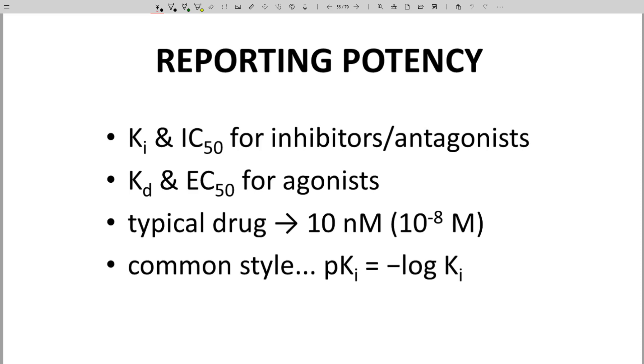During previous discussions on enzyme and ligand potency, we defined terms like IC50 and KI for both enzyme inhibitors and antagonists, and EC50 and KD for agonists. What is the typical numerical value for the potency of an approved drug? Oral small molecule drugs normally have a potency of around 10 nanomolar, that's 10 to the minus eighth molar. Let's say almost all drugs fall in the range of 1 to 100 nanomolar potency.